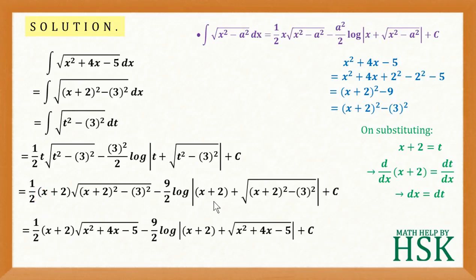So I am going to obtain the final answer as 1 by 2 times x plus 2 into square root of x square plus 4x minus 5 minus 9 by 2 log of x plus 2 plus square root of x square plus 4x minus 5 plus c. Which is my required answer.